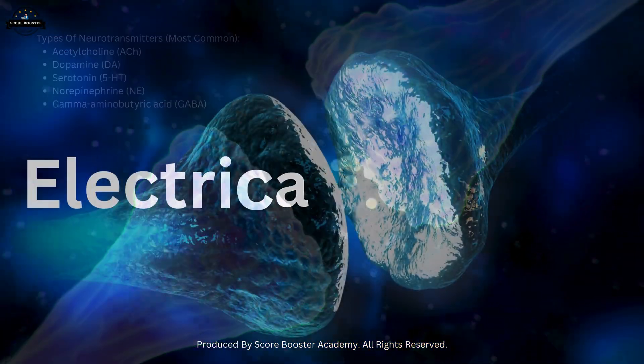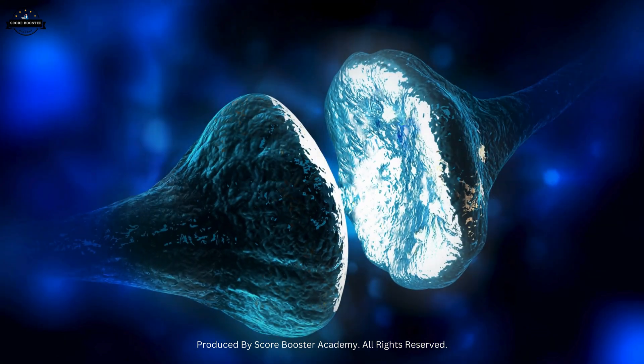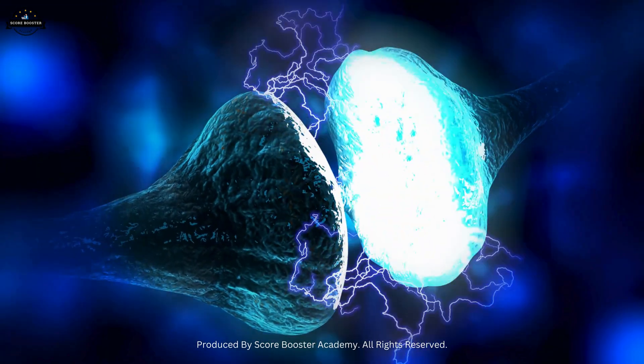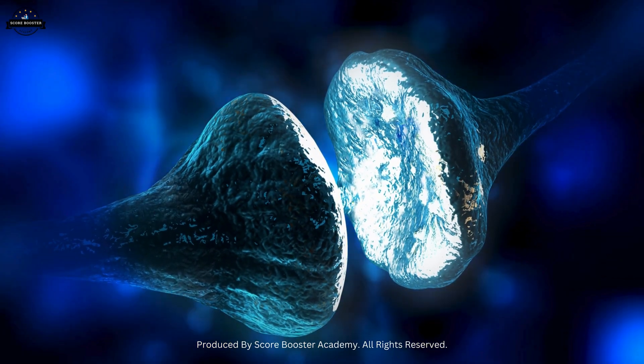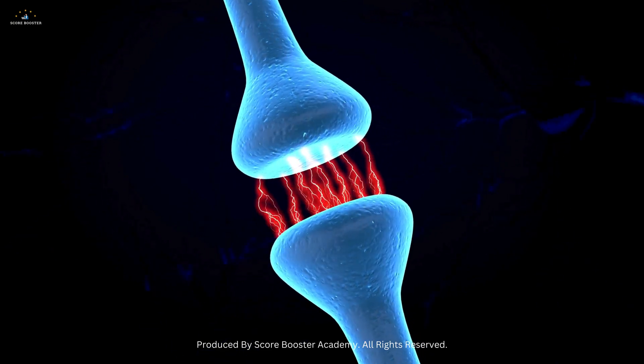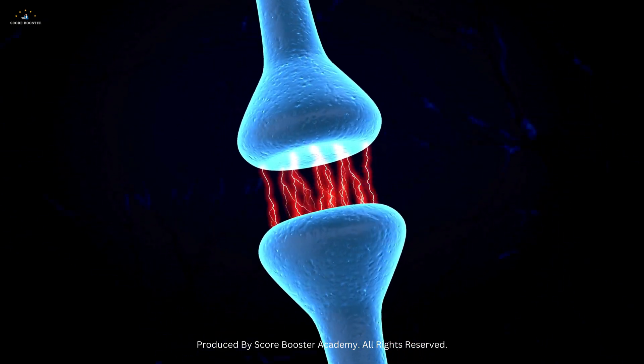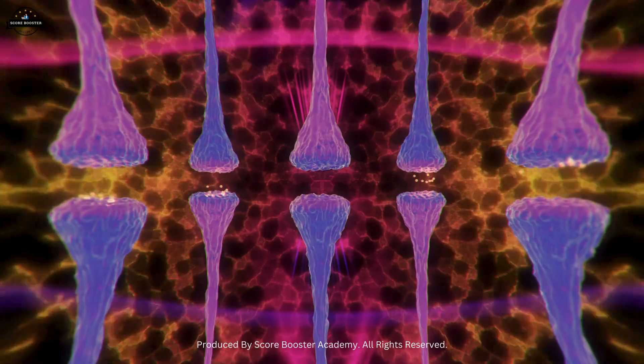Another type is the electrical synapse, where neurons are connected by gap junctions that allow direct electrical communication. Electrical synapses are faster than chemical synapses, but lack the versatility and complexity of chemical transmission.